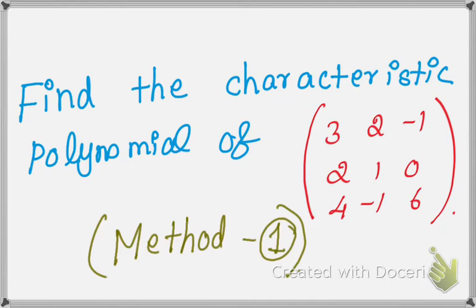Dear students, our next problem: find the characteristic polynomial of the matrix [3, 2, -1; 2, 1, 0; 4, -1, 6]. This problem will be solved using two methods.